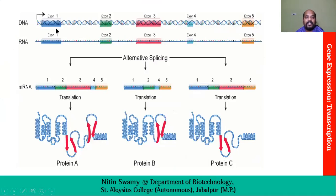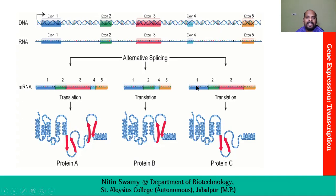In this diagram we can see exon 1, 2, 3, 4, and 5. If all are included (1, 2, 3, 4, 5) the product is protein A. If exon 3 is skipped and we take 1, 2, 4, and 5, the end product is different — protein B. And if we take 1, 2, 3, and 5, again a different product — protein C. This is alternative splicing, and this process is very important in making so many types of antibodies in our body. The positions of cut sites and polyadenylation sites are varied, enabling this alternative splicing.